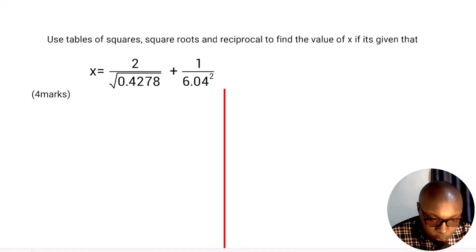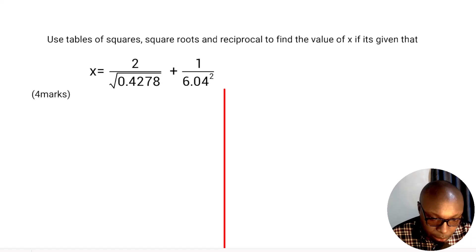Use tables of squares, square roots, and reciprocals to find the value of x, given that x equals 2 divided by the square root of 0.4278, plus 1 divided by 6.04 squared.